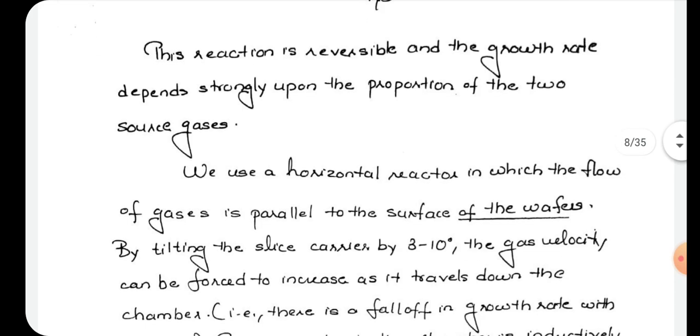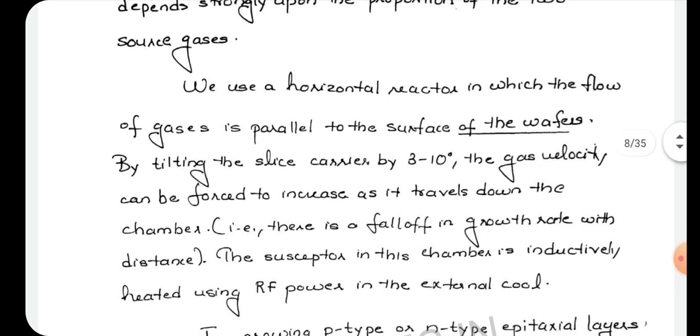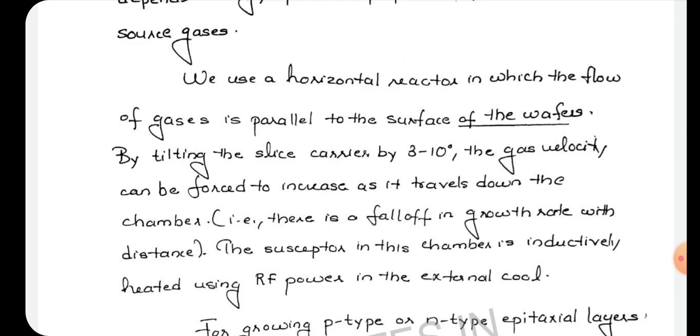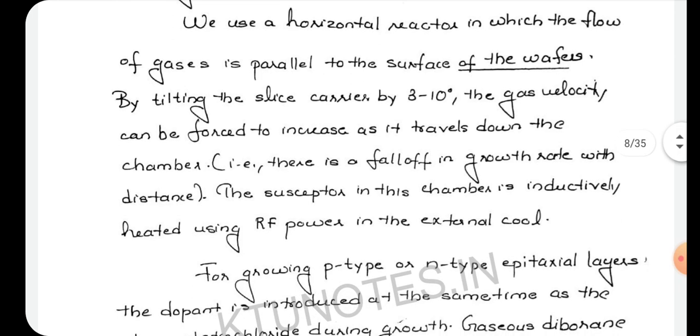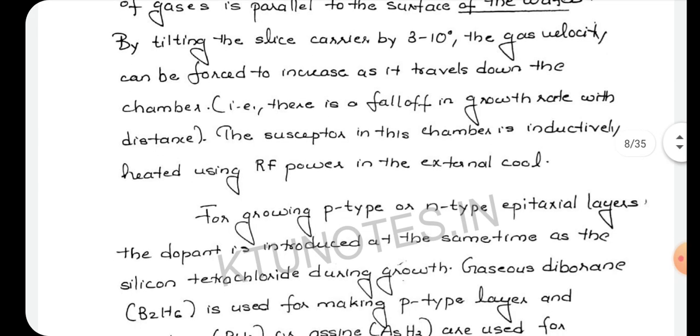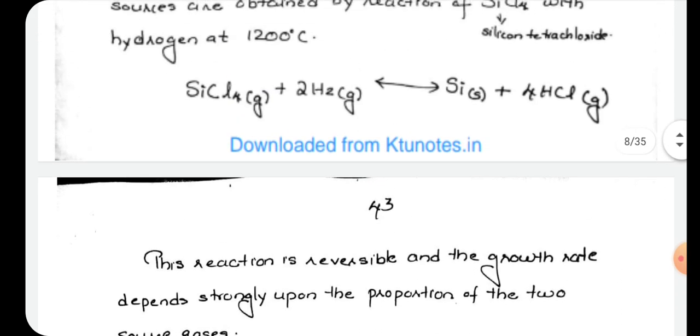We use a horizontal reactor in which the flow of gases is parallel to the surface of the wafers. By tilting the slice carrier by 3 to 10 degrees, the gas velocity can be forced to increase as it travels down the chamber, causing a fall-off in the growth rate with distance. The susceptor in this chamber is inductively heated using RF power.